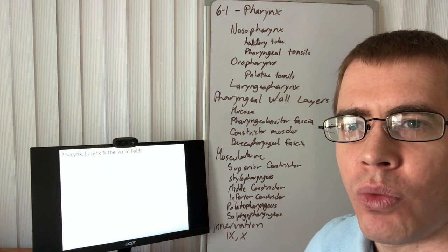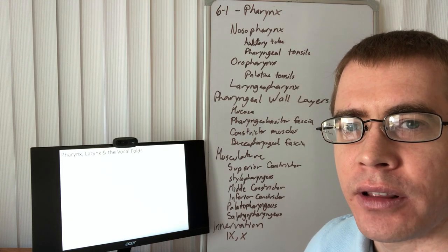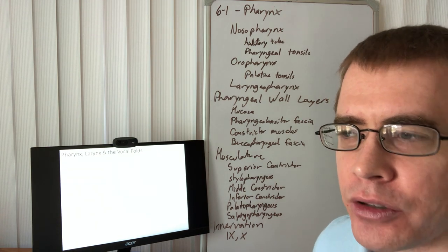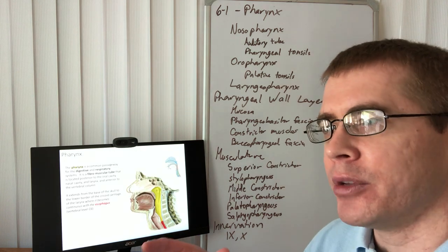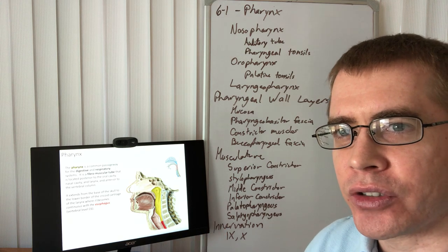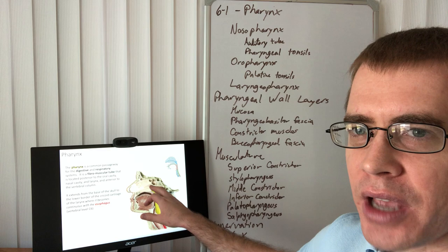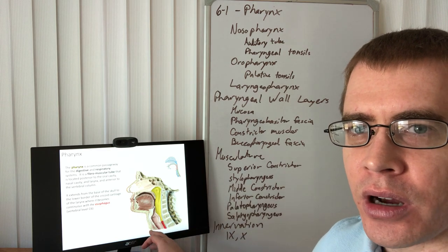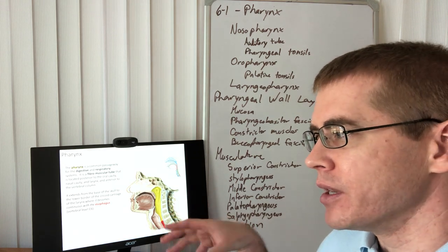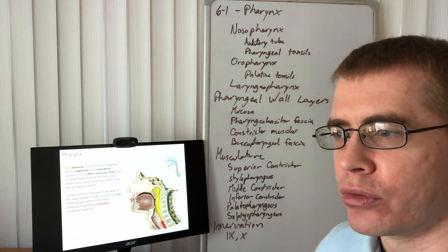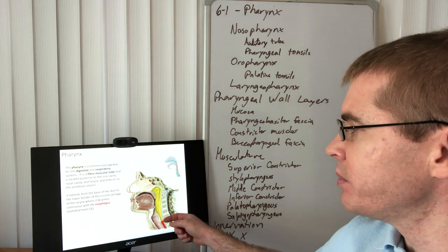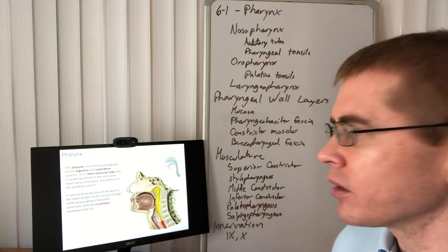Welcome to 6-1, which covers the pharynx, larynx, and vocal cords. This video will just cover the pharynx. The pharynx is the common muscular tube shared between the airways and the digestive systems, so whether it's air going into the larynx or food traveling into the esophagus, both have to go through the pharynx first. The esophagus begins below the cricoid cartilage.